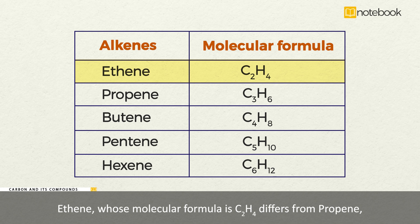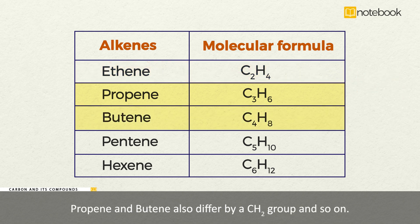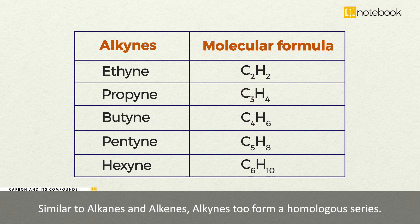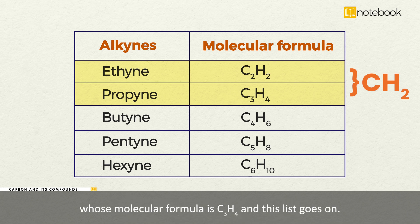Ethene, whose molecular formula is C2H4, differs from propene C3H6 by a CH2 group, and similarly, propene and butene also differ by a CH2 group and so on. Similar to alkanes and alkenes, alkynes too form a homologous series. Ethyne, whose molecular formula C2H2, has one CH2 group less than propyne, whose molecular formula is C3H4, and this list goes on.